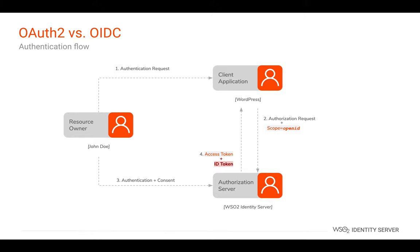There are two main additions to the basic OAuth 2.0 flow when it becomes an OIDC flow. The first is the scope sent along with the authorization request by the application to the server. 'openid' is added as a value of scope — a specific term used to denote that it is an OIDC flow. On receiving the scope, the authorization server knows it is an OpenID Connect request. In return, the authorization server sends an ID token along with the access token to the client application. This is the second attribute that makes a difference in the flow. The ID token is a JSON Web Token which contains user information.